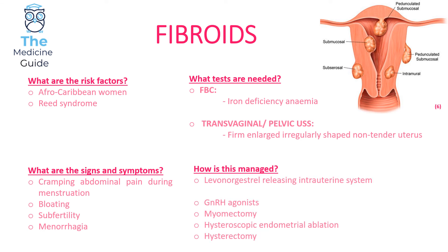In terms of management, we need to insert the Mirena levonorgestrel-releasing intrauterine system, use gonadotropin-releasing hormone agonists, consider myomectomy, hysteroscopic endometrial ablation, or hysterectomy. Again, hysterectomy is only offered to women who have completed their family and are confident they won't want any children in the future.